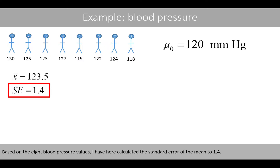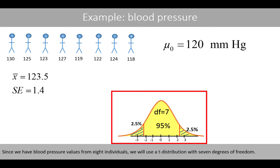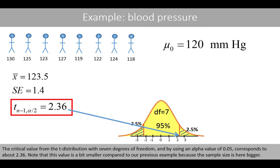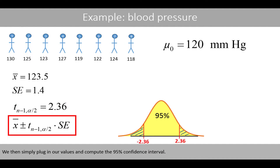Based on the eight blood pressure values, the standard error of the mean is 1.4. Since we have blood pressure values from eight individuals, we use the t-distribution with 7 degrees of freedom. The critical value from this t-distribution using an alpha of 0.05 corresponds to about 2.36. Note that this value is a bit smaller compared to our previous example because the sample size is bigger. We then plug in our values and compute the 95% confidence interval.